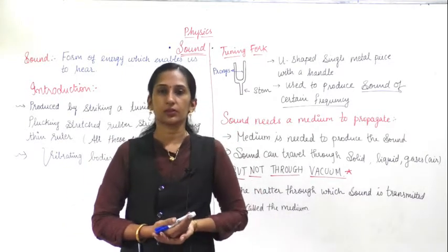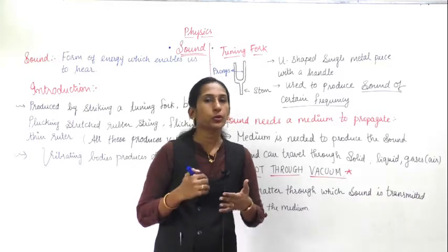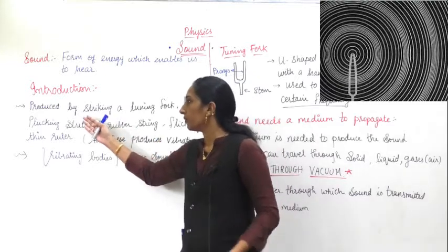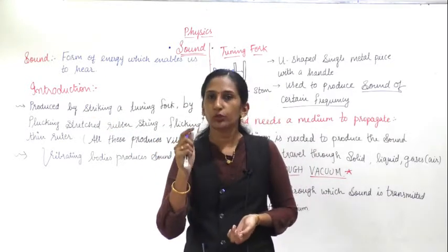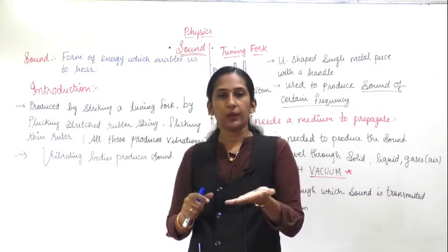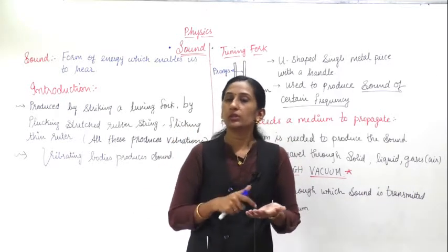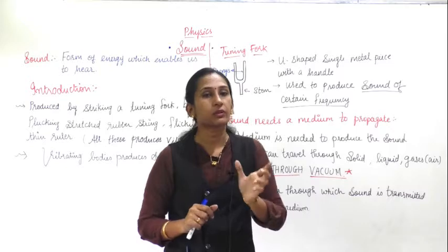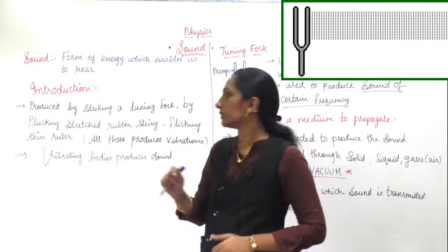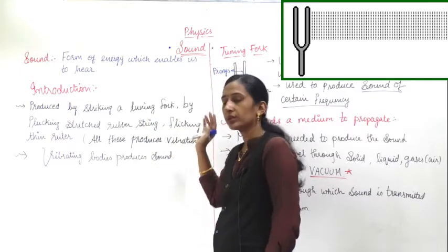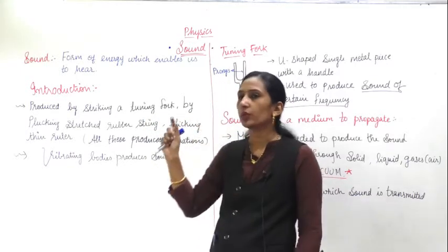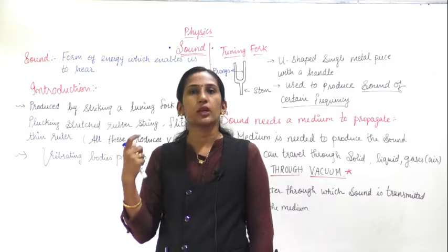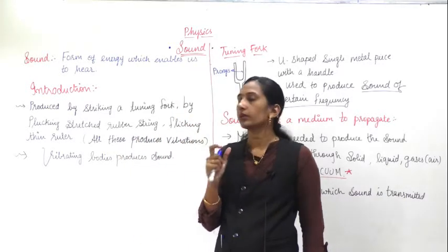The tuning fork is used to produce vibrations. To use it, you take the tuning fork in your hand, take a rubber pad, and strike it. When you strike it, there is a vibration in the prongs. When the prongs vibrate, the tuning fork produces a small sound. When you bring it close to your ears, you can hear the vibrating sound.